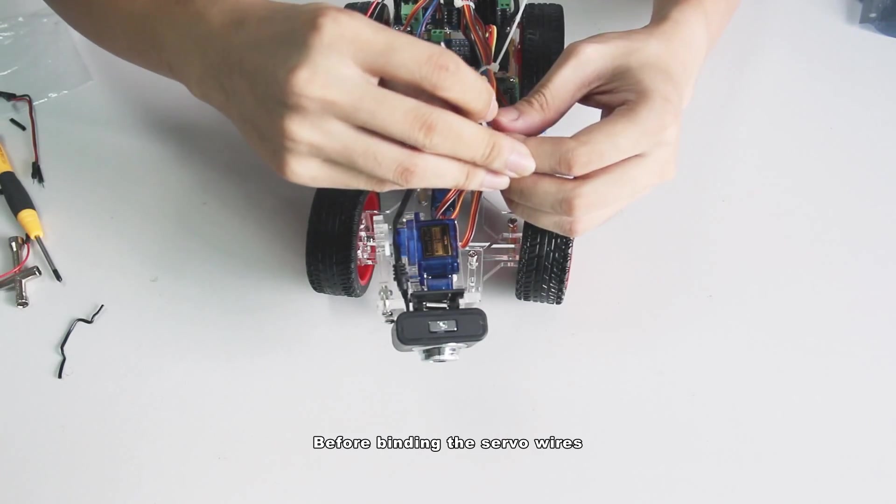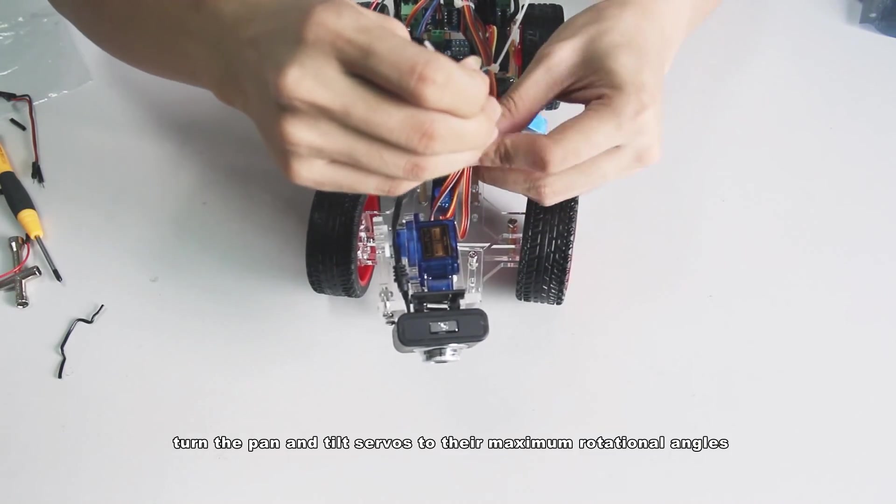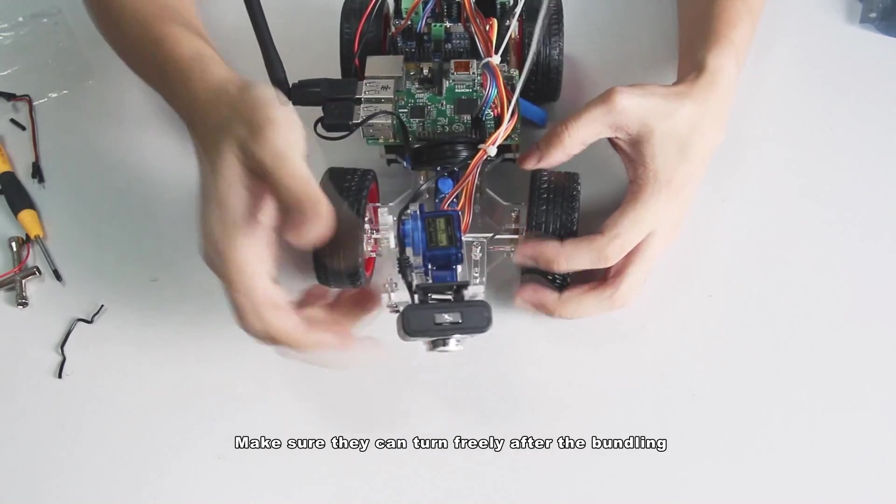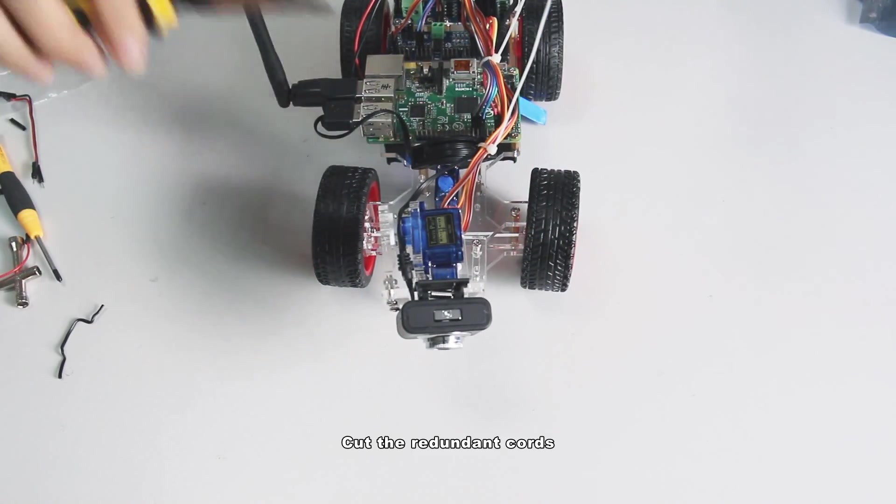Before binding the servo wires, turn the pan and tilt servos to their maximum rotational angles. Make sure they can turn freely after the bundling. Cut the redundant cords.